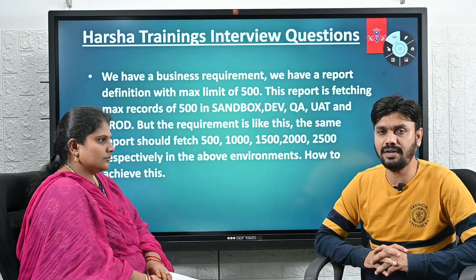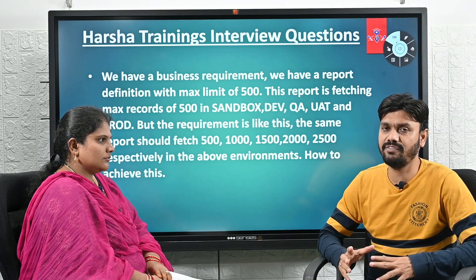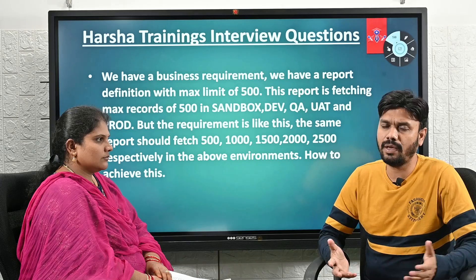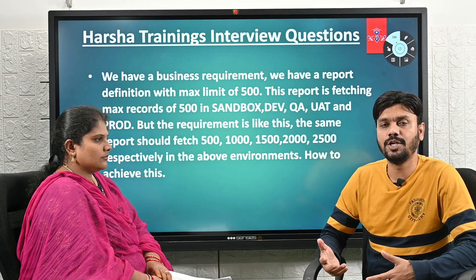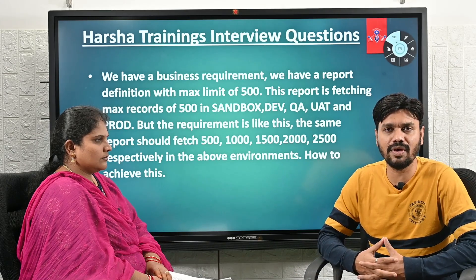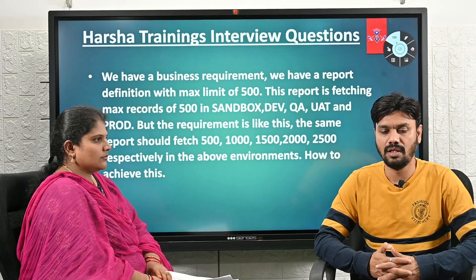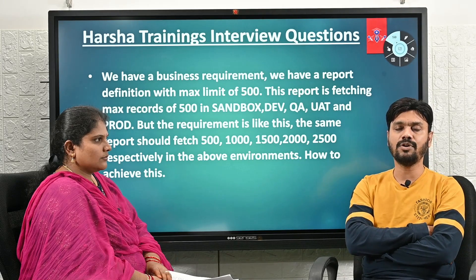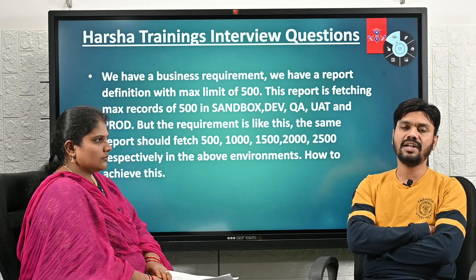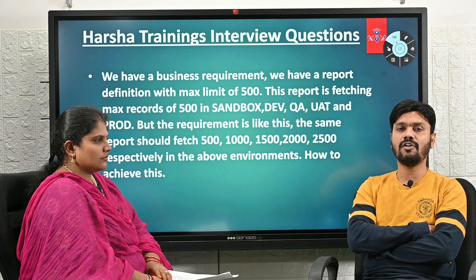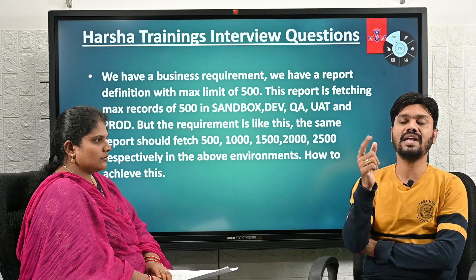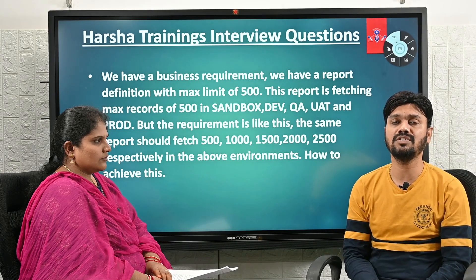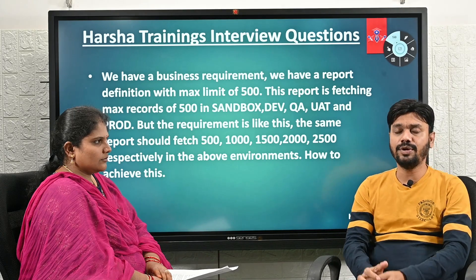The Report Definition Rule is created in dev and currently fetches 500 everywhere. The requirement is: in sandbox it fetches 500, in development it should fetch 1000, in QA it should be 1500, in UAT 2000, and in production 2500. So how do we make the same report fetch different record counts per environment?